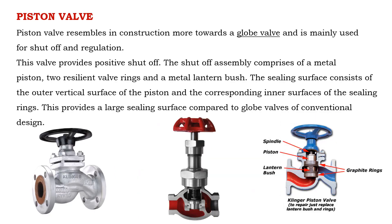Piston valve resembles a globe valve in construction and is mainly used for shut off and regulation. This valve provides positive shut off. The shut off assembly comprises a metal piston, two resilient valve rings, and a metal lantern bush. The sealing surface consists of the outer vertical surface of the piston and the corresponding inner surfaces of the sealing rings, providing a large sealing surface compared to globe valves of conventional design. Piston valve is of two types: balanced and unbalanced. Balanced valve is used in high pressure services and unbalanced for low pressure services.